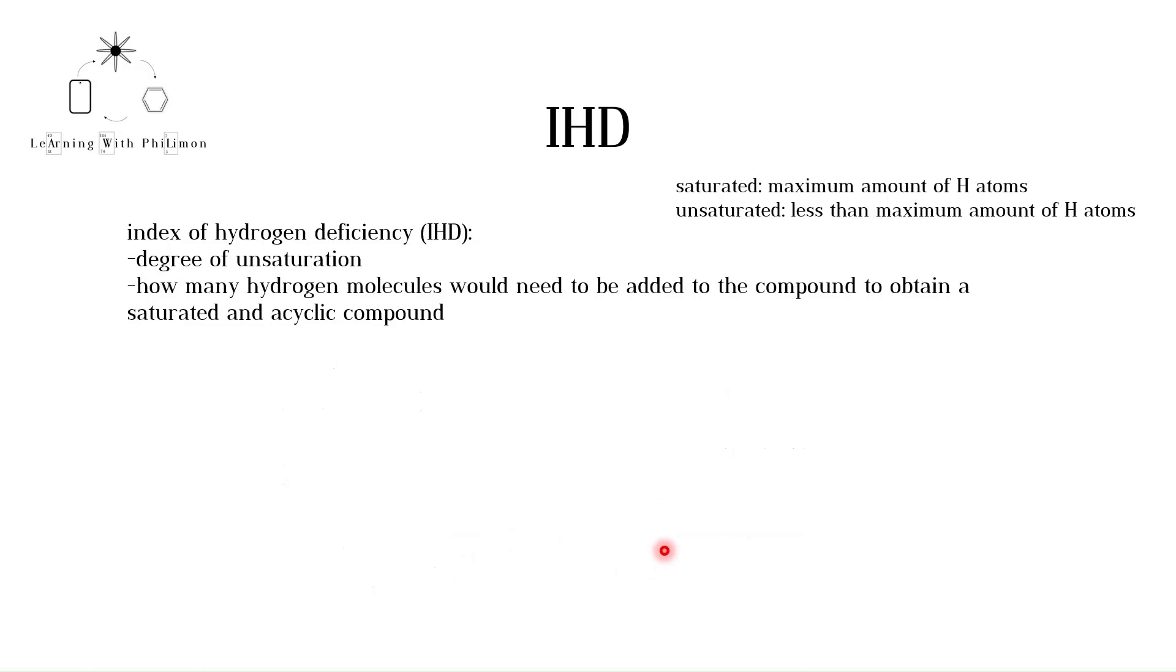A triple bond counts as two IHD. For example, ethyne would have to react with two hydrogen molecules to form ethane.